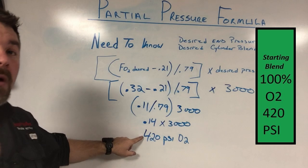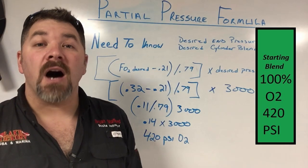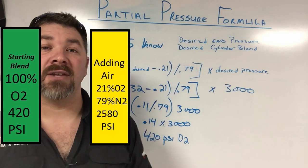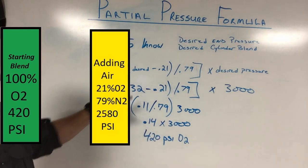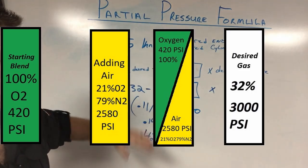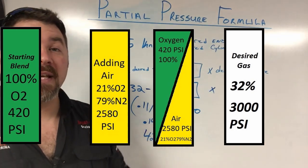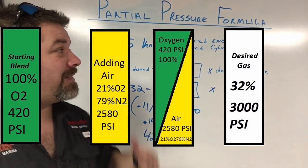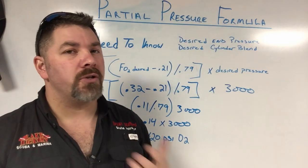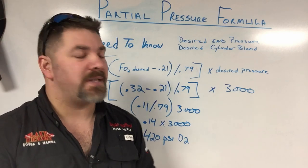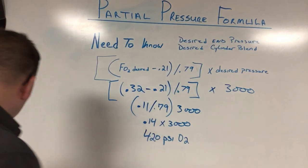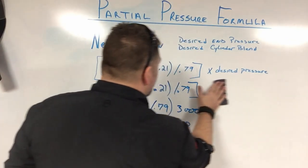So it's a very simple process. If you follow the formula all the way down and use a calculator, of course, it becomes very simple for us. And this is actually the formula that we use when we partial pressure blend nitrox. You can do the exact same thing with tri-mix. There's a couple of little extra steps in there, but essentially, this is how easy it is. Now I did promise you that I'm going to do it in the metric system as well. So let me get this erased up.